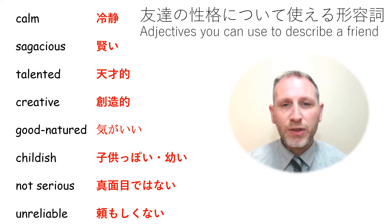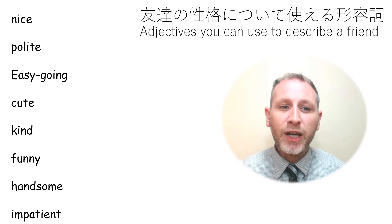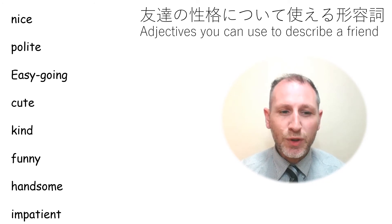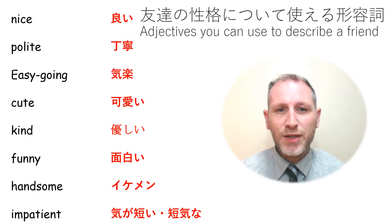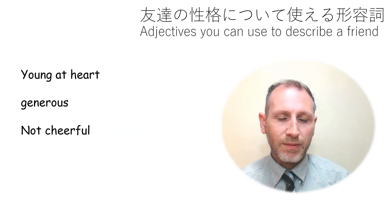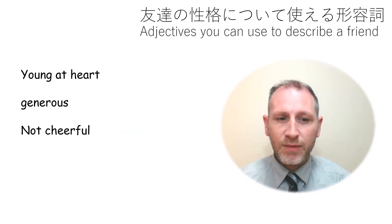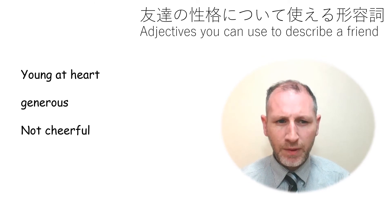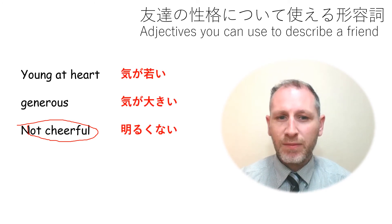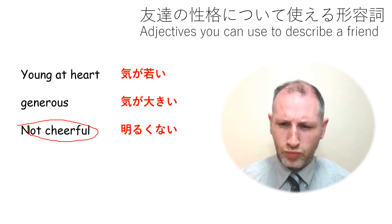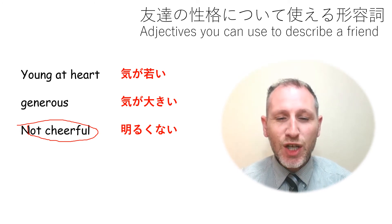The next adjectives you can use to describe a person's character are: nice, polite, easygoing, cute, kind, funny, handsome, impatient. And this is what they mean. The last few are: young at heart, generous, and not cheerful — 'not cheerful' is not so good. In Japanese: 'kikaoke,' 'kikaoke,' 'akaruku nai,' and serious.